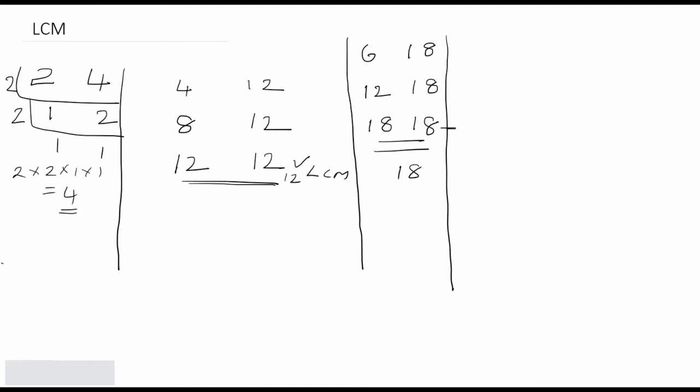Let us see one more example for clarification. Take four and nine. Are both equal? No. If both are not equal, find the smallest number, which is four. Add four to four: we get eight and nine. Are they equal? No. Add four again: eight plus four is twelve. Keep nine as it is. Every time you add the original smaller number to its side only.